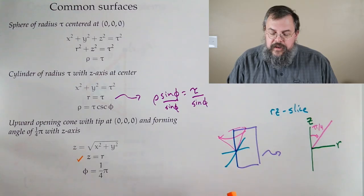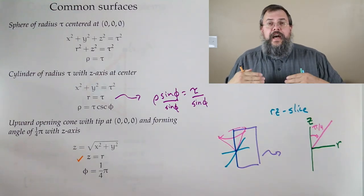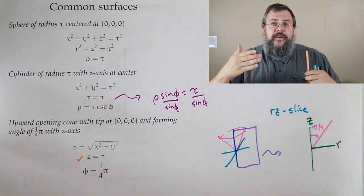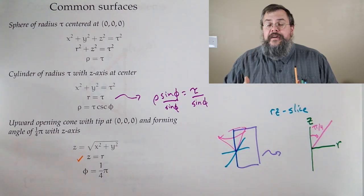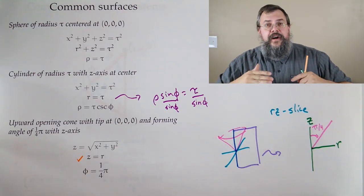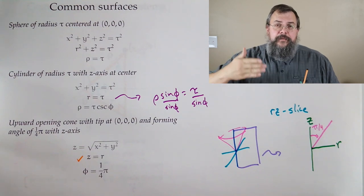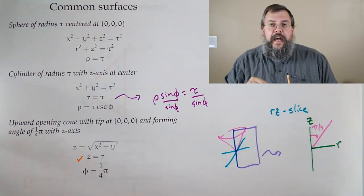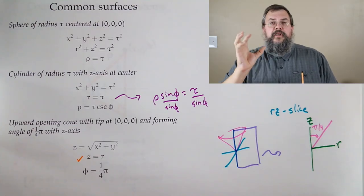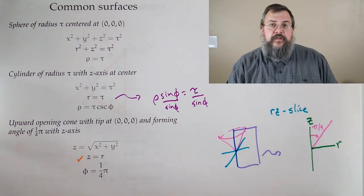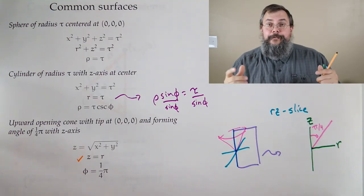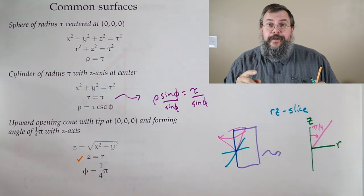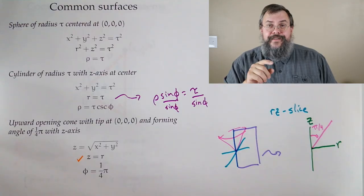Of course there are better cross-sections than others. This half-plane slice looking down the positive z-axis is a great way to build intuition when you have rotational symmetry around the z-axis. We'll see it again and again. Now we should go do some practice. See you soon.